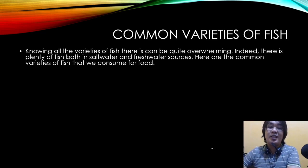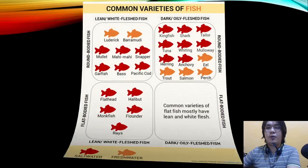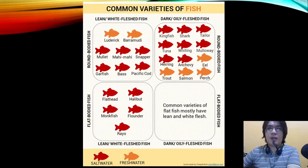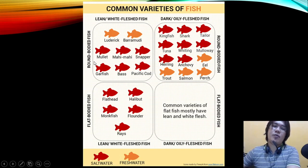These are the common varieties of fish. Knowing all the varieties can be quite overwhelming — there are plenty of fish in both salt water and fresh water sources. The first common varieties are the ludric and barramundi. Their structure is round-bodied fish with lean white flesh, coming from freshwater sources.